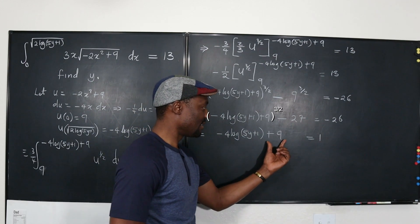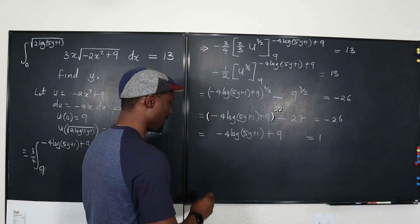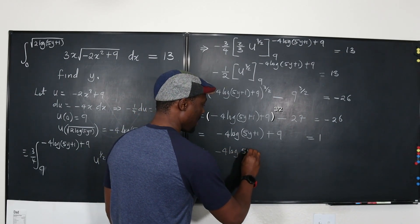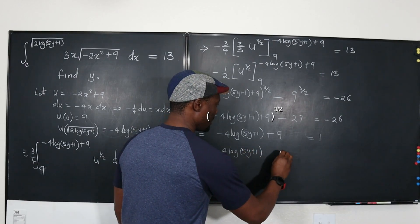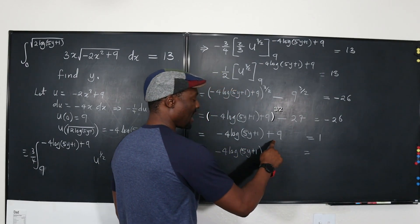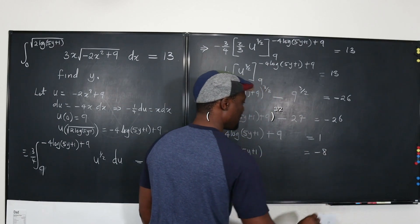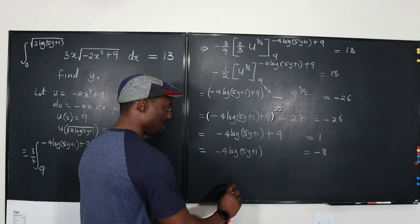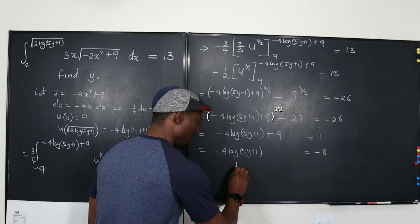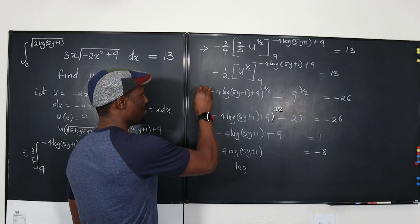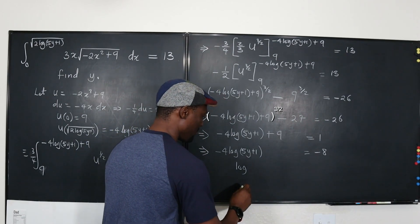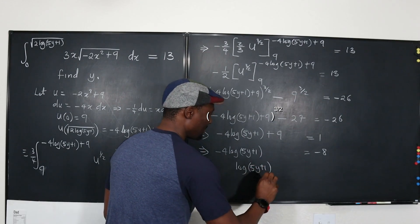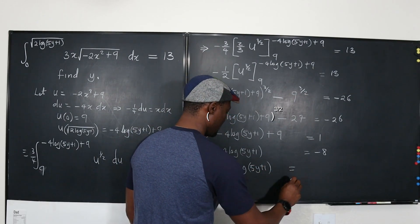If we take this 9 to the other side, we're going to end up with negative 4 log 5y plus 1 equals, subtract 9 from both sides, you're going to end up with negative 8. Now, we can divide both sides by negative 4. If we divide both sides by negative 4, you end up with, we don't want to have two equal sides. We're going to end up with the logarithm of 5y plus 1 will be equal to 2.